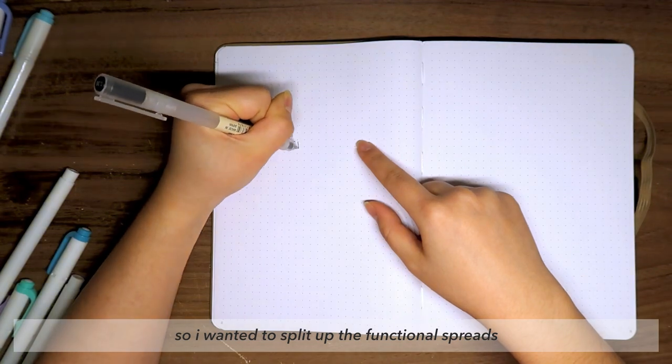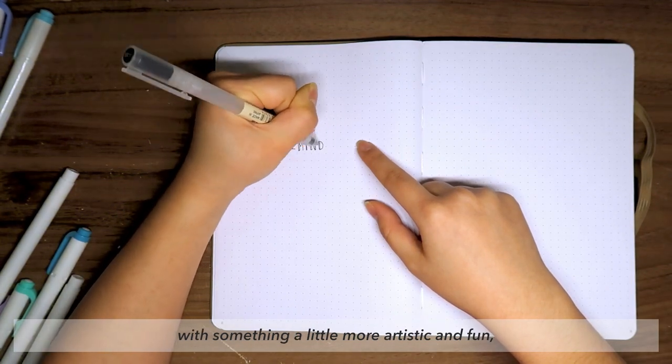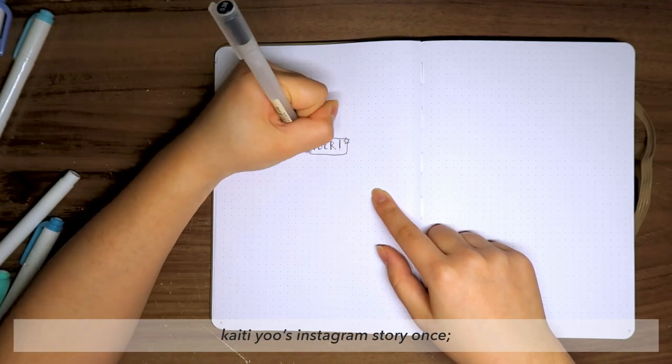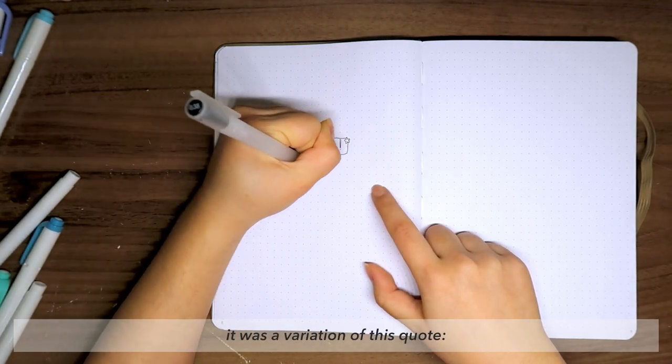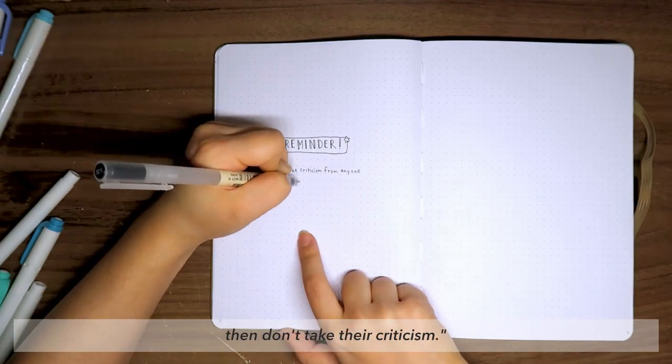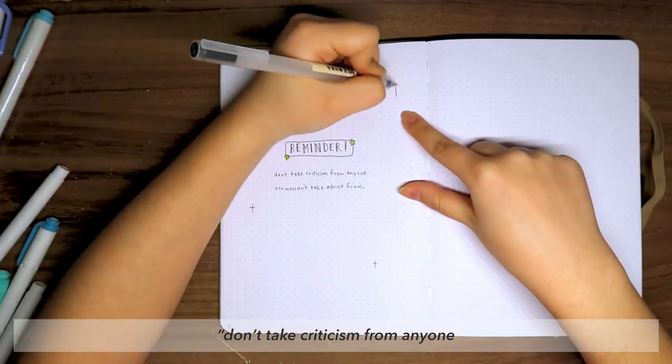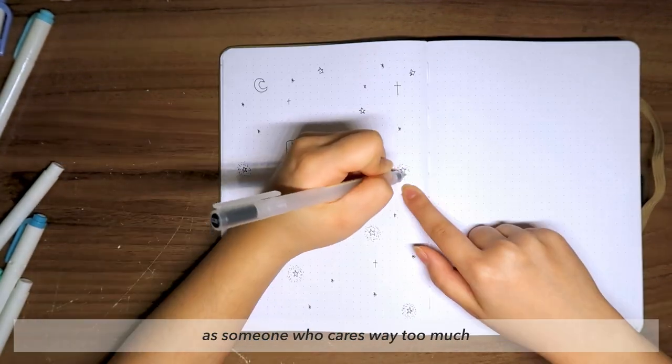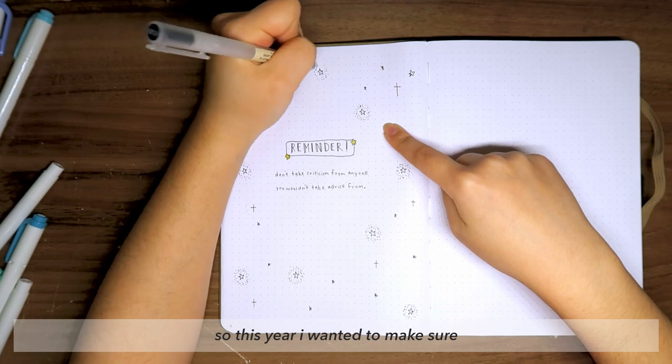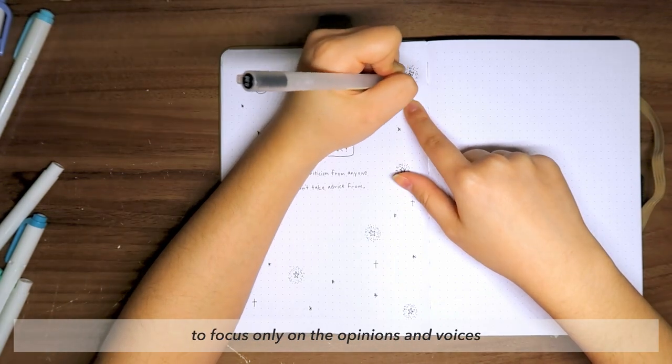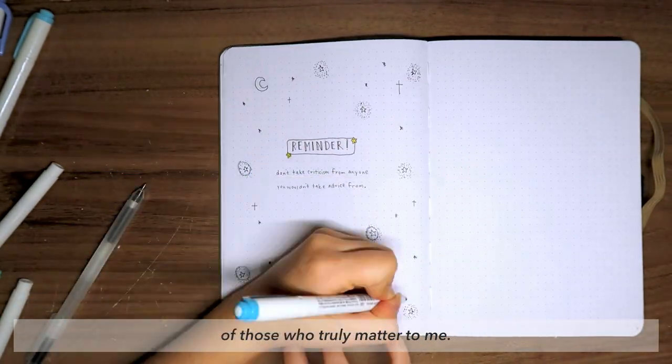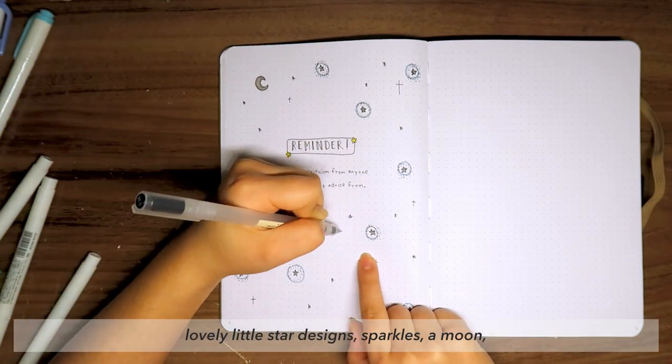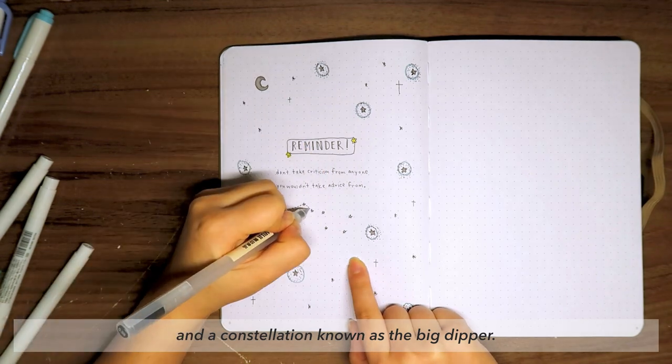I wanted to split up the functional spreads with something a little more artistic and fun, so I wrote a quote I've been really loving lately that I actually saw on my friend Katie Yu's Instagram story once. It was a variation of this quote: 'If you wouldn't go to them for advice, then don't take their criticism.' So here I wrote, 'Don't take criticism from anyone you wouldn't take advice from.' That really truly resonated with me as someone who cares way too much what others think of them. So this year, I wanted to make sure I keep reminding myself to focus only on the opinions and voices of those who truly matter to me. Then to finish off the page, I added lovely little star designs, sparkles, a moon, and a constellation known as the Big Dipper.